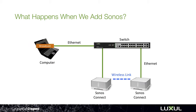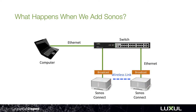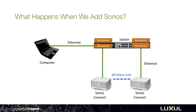So if a device sends out a broadcast, it goes across to the switch and the switch does its job — it duplicates it and sends it out all of its ports, reaching the Sonos devices, which send it across their wireless link and then back up to the switch. The switch gets it again and duplicates it, and the process starts over and over again, giving you a broadcast storm because of this loop in your system.